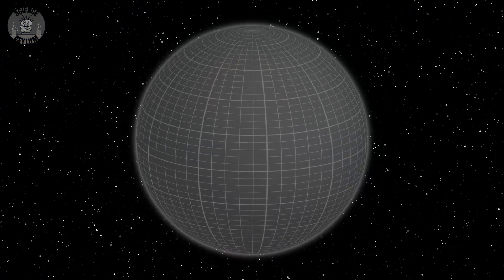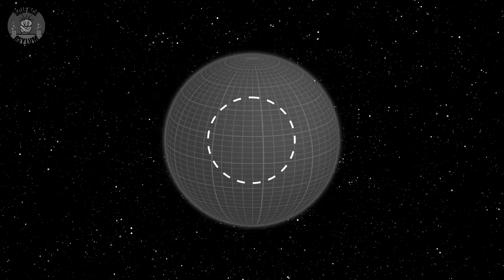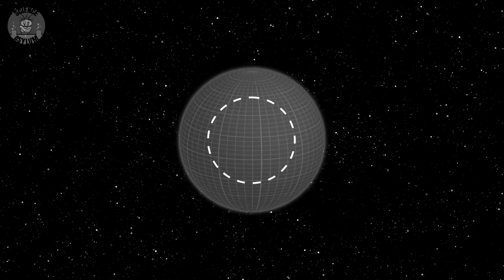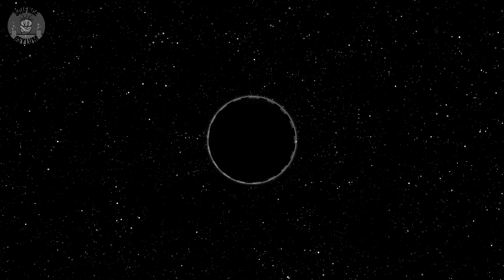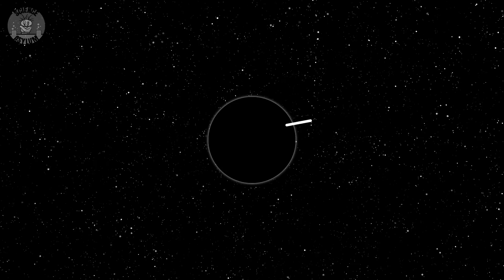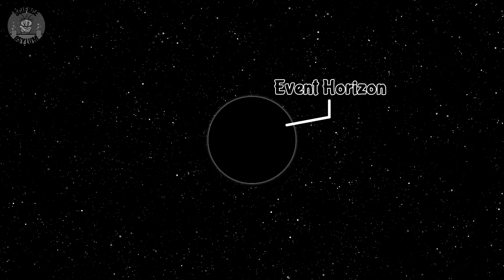The neutron star continues to collapse under its own gravity. Eventually, the mass is compressed into such a small volume that the space-time around the neutron star is curved to an extreme. A perfectly black bubble forms around it called an event horizon. This is a black hole.